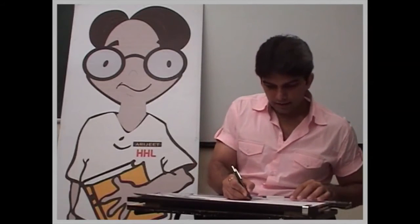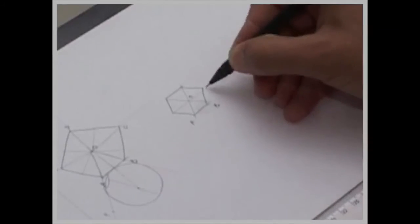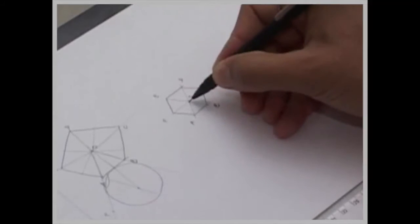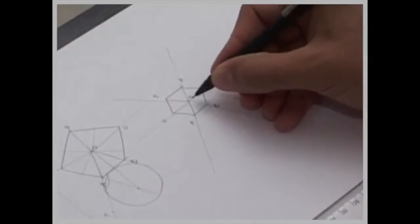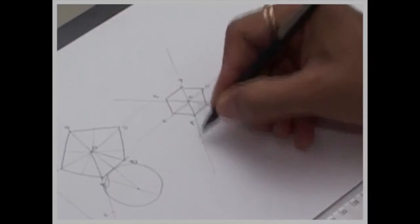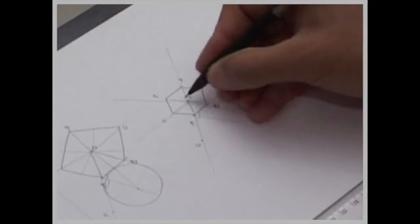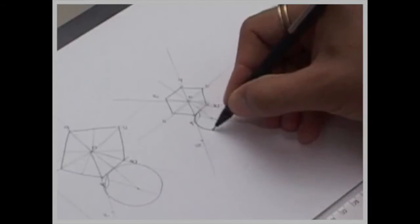Now we can draw in hexagon also. You extend OA, OB, OL. Instead of bisecting OAB, you bisect B, A, G. Draw vertical line. Wherever it will intersect, you draw circle.